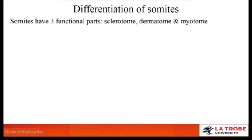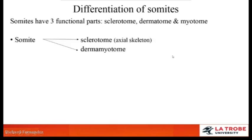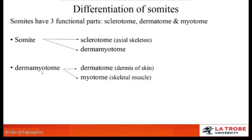When we consider somite differentiation, it's very important to understand that there are three functional aspects that result from somite development: the sclerotome, dermatome, and myotome. A somite will differentiate into a sclerotome and a dermomyotome. The sclerotome refers to the bones of the axial skeleton — the vertebrae. Differentiation of the dermomyotome results in the dermatome, which makes up skin, and the myotome, which makes up muscle.